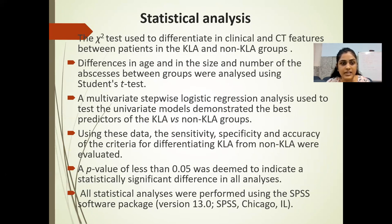Statistical analysis: a chi-square test was used to compare clinical and CT features between the KLA and non-KLA groups. Differences in age and in size and number of abscesses between groups were analyzed using Student's t-test. A multivariate stepwise logistic regression analysis was used to test which univariate models demonstrated the best predictors of KLA versus non-KLA groups. Sensitivity, specificity, and accuracy of differentiating criteria were evaluated. A p-value of less than 0.05 was deemed statistically significant. All analyses were performed using the SPSS software package.